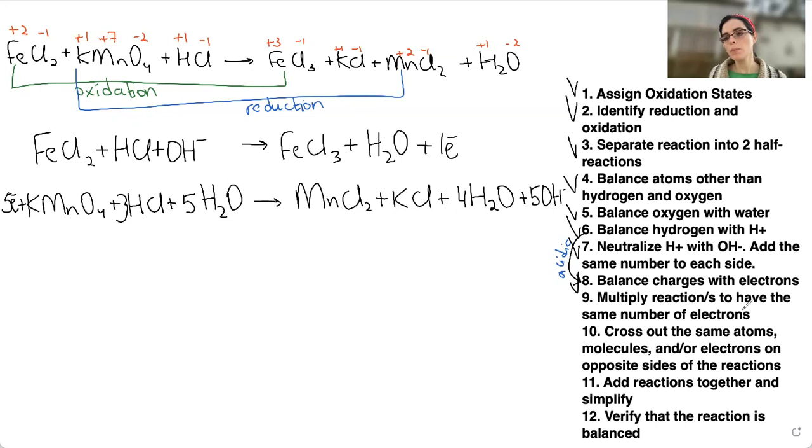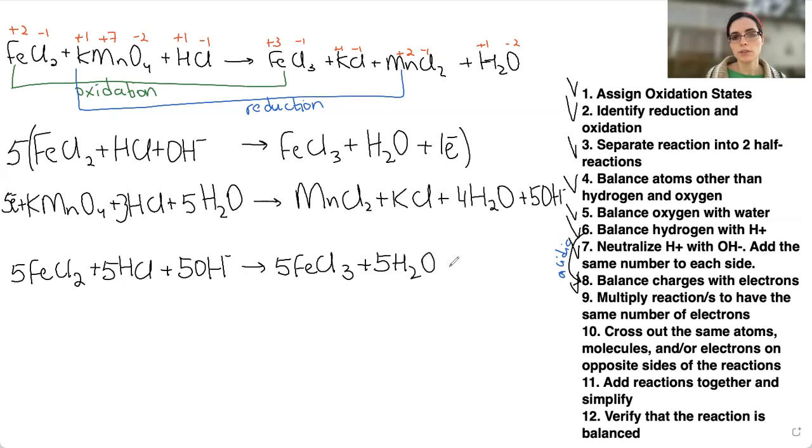Multiply reactions to have the same number of electrons. Well, we need to multiply both reactions sometimes, or just one reaction, in a way that we end up with the same number of electrons in each reaction. So how are we going to do that? The simplest thing would be to multiply the first reaction by five. But then we have to remember that we need to multiply everything. So every single coefficient, every single molecule gets multiplied by five. In chemistry, if we don't have a coefficient in front of some molecule, it means it's implied that the coefficient is one. And one multiplied by five is obviously five. So I'm making sure to multiply everything.